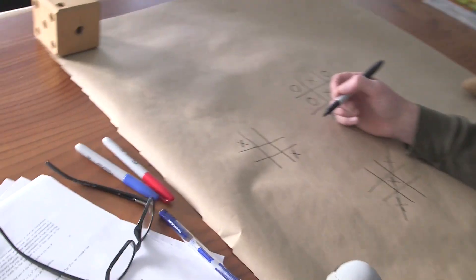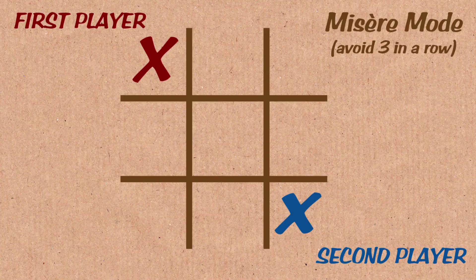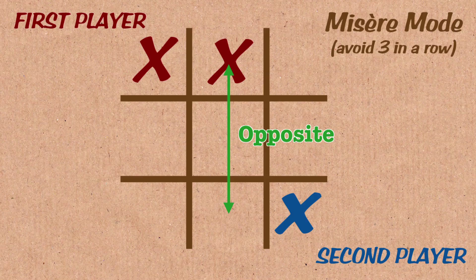So now it's back to the first player. He can't play in the middle, so let's say that he plays here. Ah, but now the second player can now again play exactly opposite on the other side of the center. So now they go there.